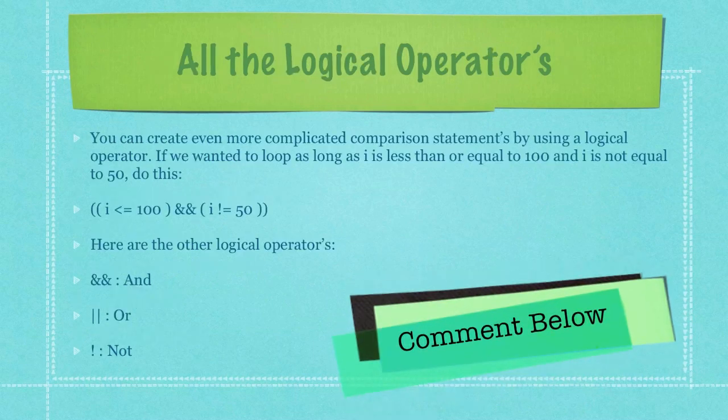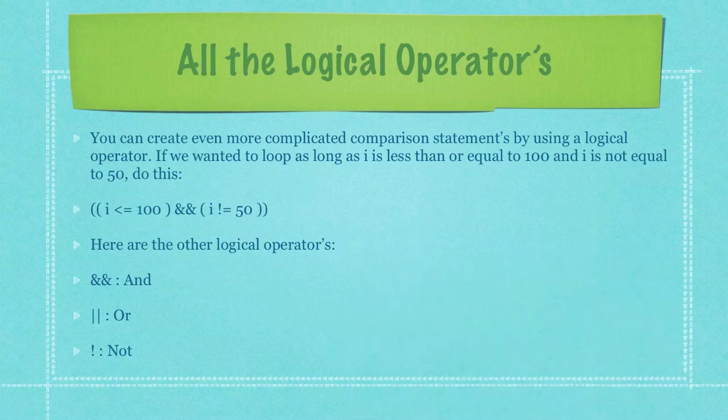You can create even more complicated comparison statements by using what is called a logical operator. If we wanted to loop as long as i is less than or equal to 100 and i is not equal to 50 you would just simply do that by inserting these two and signs between these two checks.